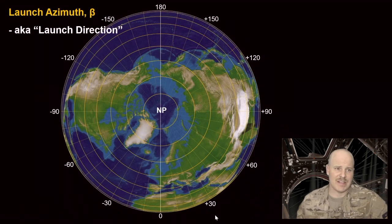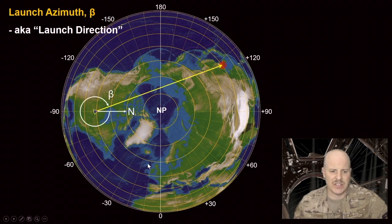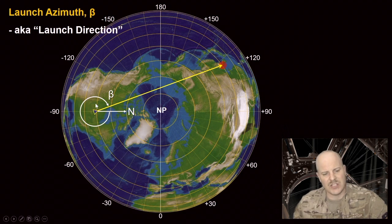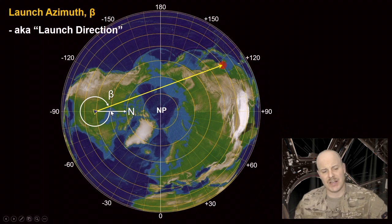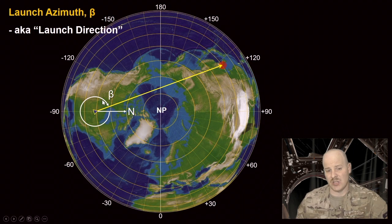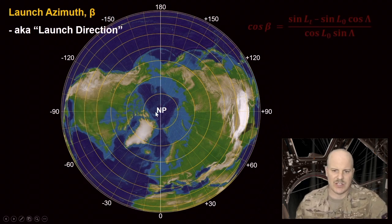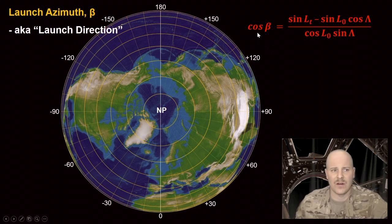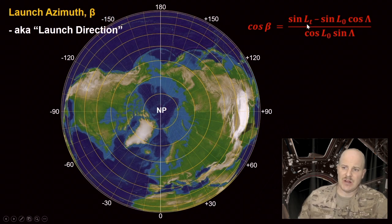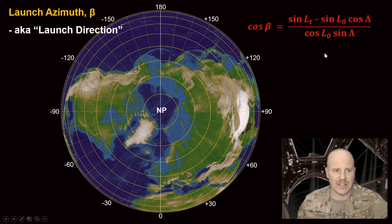Our next geometric term is launch azimuth, which we define as beta. We define that conventionally from North in the clockwise direction. So if we're launching from the United States to the South China Sea, we would use a beta related to that angle. One thing to remember is that North is pointing towards the North Pole — it's not necessarily just up. You have an equation on your equation sheet that says cosine beta, or launch azimuth, equals a relationship between the latitude of our target, the latitude of our origin point, and our range angles calculated before. That's how you calculate the direction you need to launch.